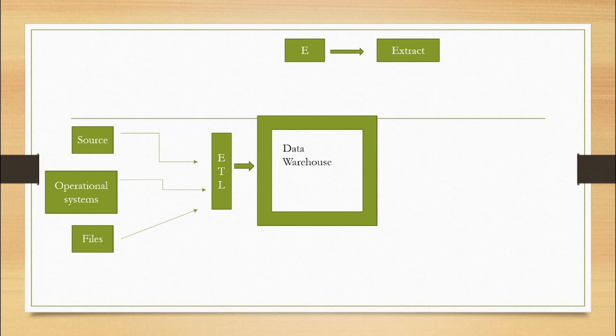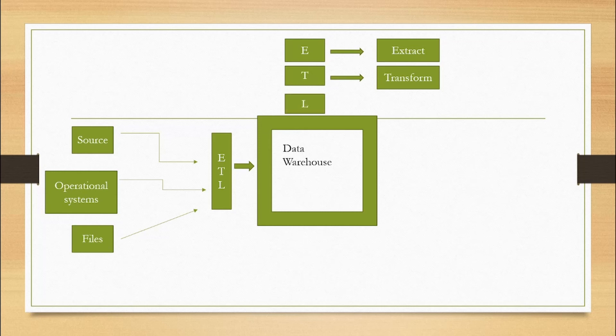We need to extract what kind of data we need to store in our data warehouse — from source data, operational system data, and file system data. After that, T means Transform the data, because the data may contain many errors and null values, so we have to handle them and clean the data. Then L means Load the data — we extract it, transform it into a structured format, then load it into our data warehouse.